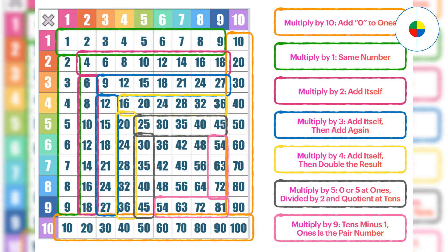Here are some simple rules. Any number multiplied by 10, just add 0 to the 1's position. Any number multiplied by 1 is the same number. Any number multiplied by 2, just add the same number. Any number multiplied by 3, just add the same number, then add again.